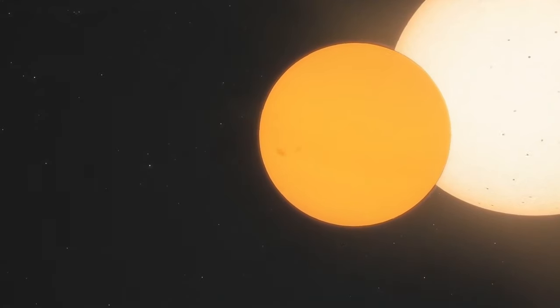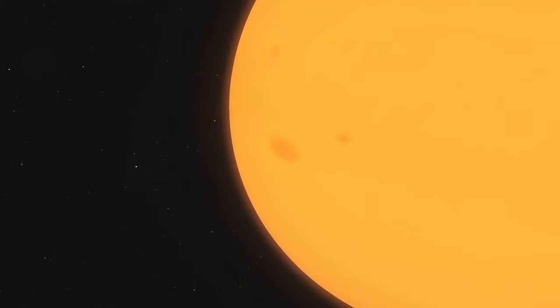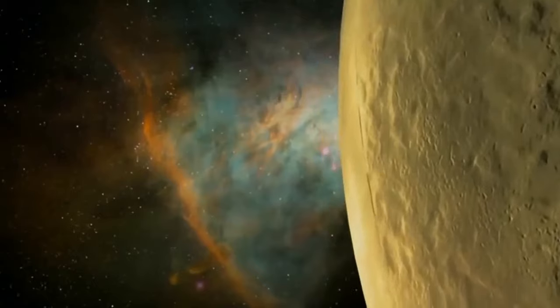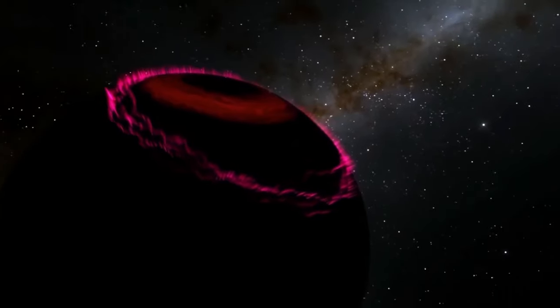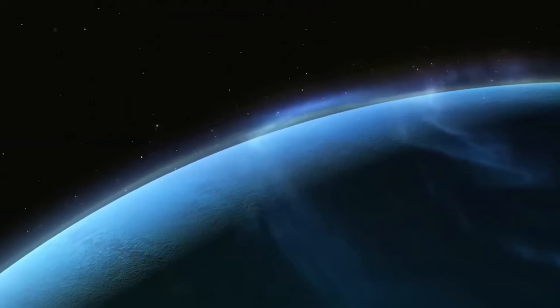A recent mission proposal for a Neptune orbiter aimed for an initial launch in 2033 and arrival in 2049. However, this timeline would be significantly extended if we opt for a detour to Uranus first, possibly pushing the Neptune mission into the 2050s.